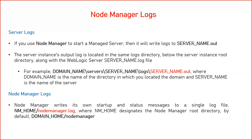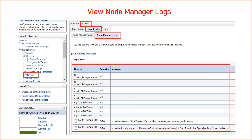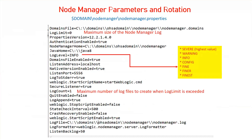Apart from the server log file, there is also a log file for node manager itself. The node manager log file is named 'nodemanager.log' and is located inside your domain in a folder named 'nodemanager'. You can use this log file to troubleshoot node manager issues, such as when node manager is not starting up. You can also view node manager logs from the admin console by clicking on Machines, then your machine name, then Monitoring, then Node Manager Log.